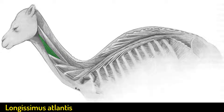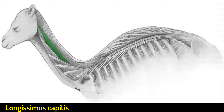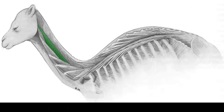The longissimus atlantis inserts on the caudo-ventral surface of the wing of the atlas. The longissimus capitis emerges medially and dorsally to the longissimus atlantis and inserts on the mastoid process of the temporal bone.